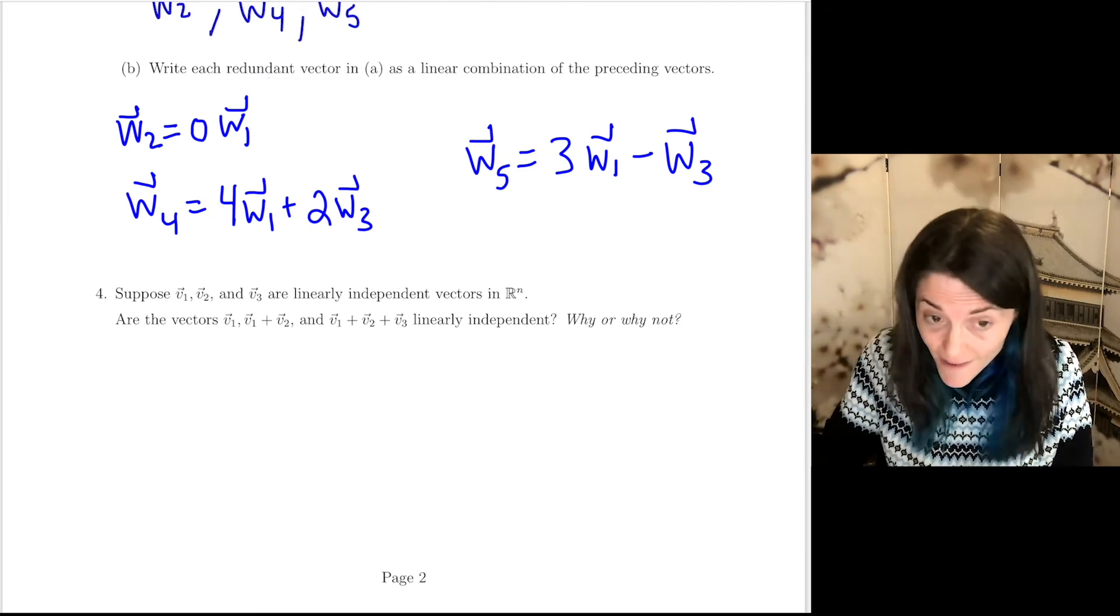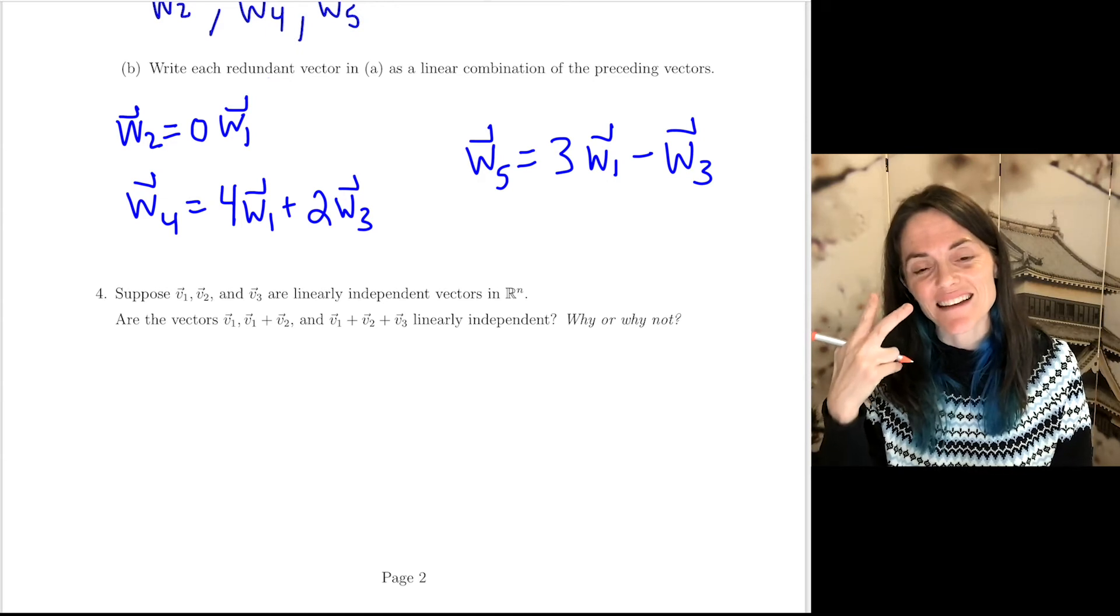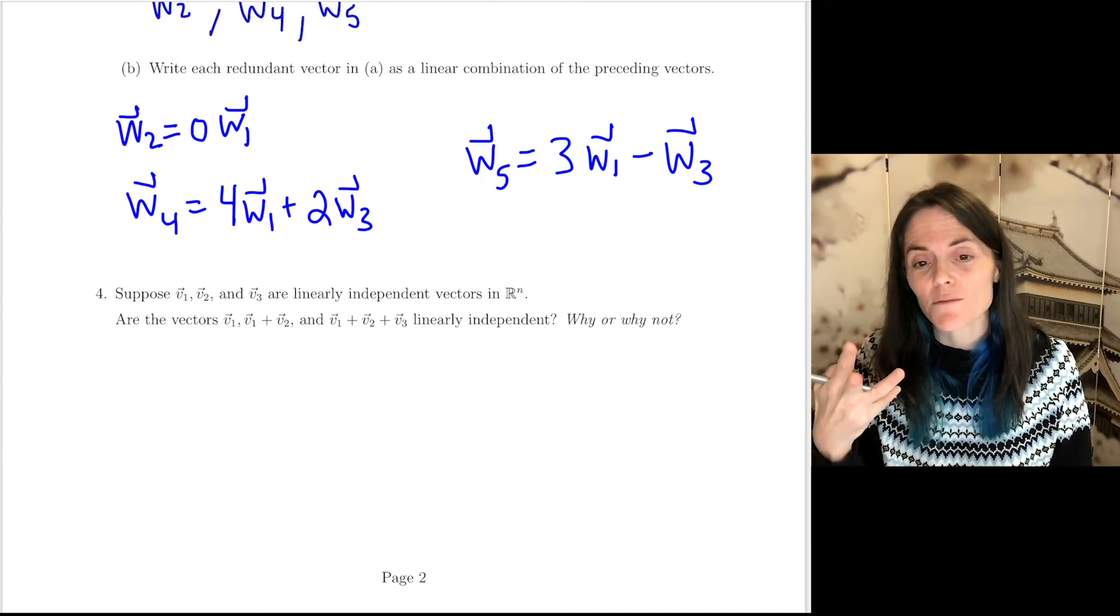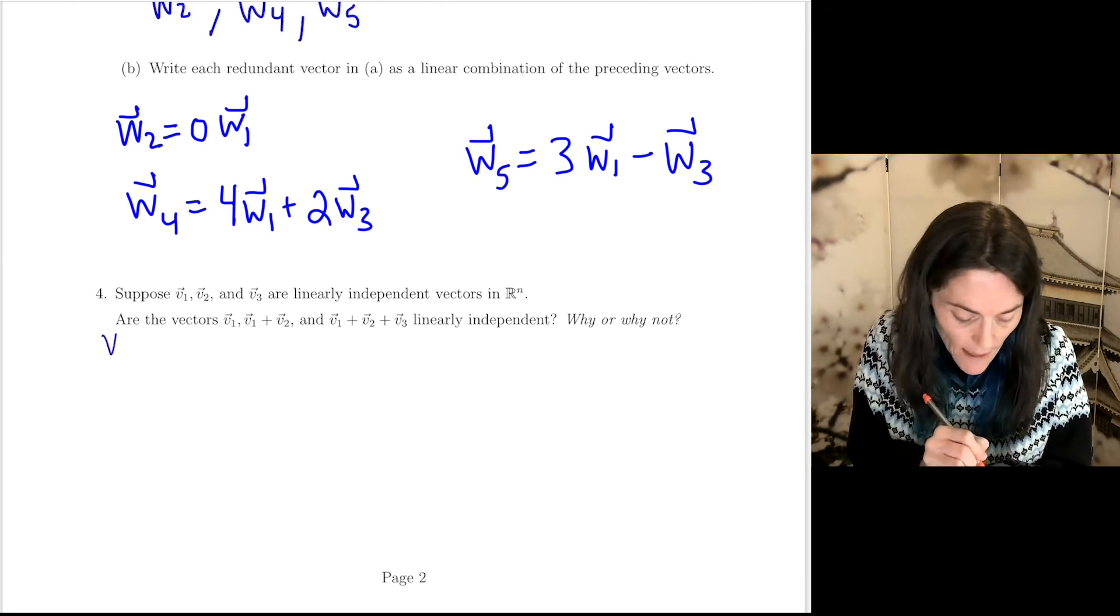Now, the question is, are the vectors, three of them, V1, V1 plus V2, V1 plus V2 plus V3, are these linearly independent? Why or why not? So let me say the answer is yes.